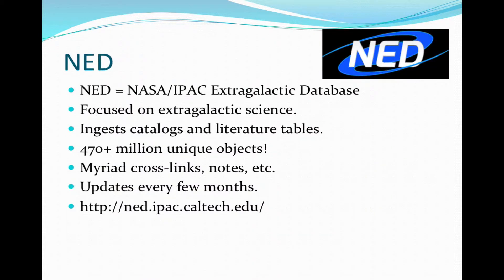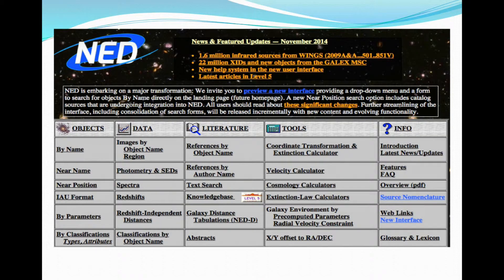One of the big archives here at IPAC is NED — the NASA IPAC Extragalactic Database. It is specifically focused on extragalactic science. It ingests huge catalogs, but also huge tables from the literature. It has more than 470 million objects as I speak, with many different crosslinks and notes about objects. They do updates every few months, so by the time you're listening to this they may have even more. You can search by name or by position in a variety of different ways.